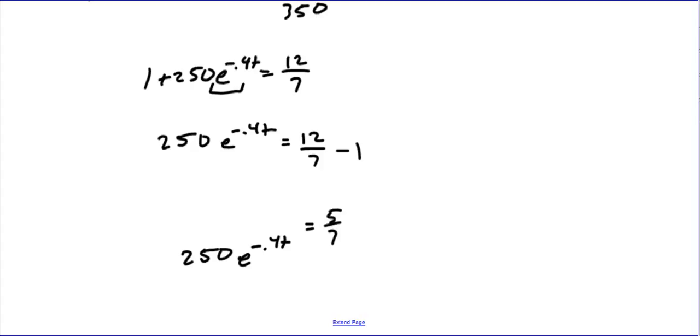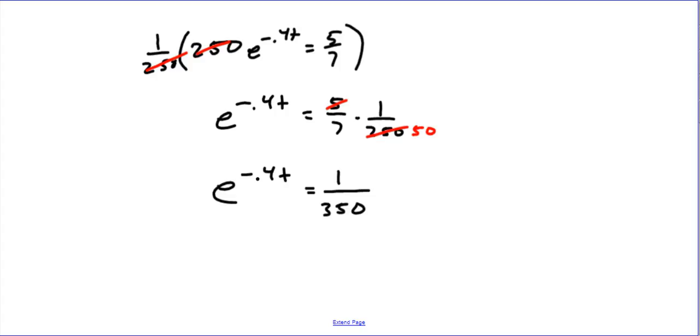So we're simplifying, we've got our answer. Now the last thing, we're getting to the end, but now we want to get t by itself. So we're going to divide by 1 over 250 from both sides. That will cancel out, and we also have to do that over here. So we have e to the negative 0.4t equals 5 sevenths times 1 over 250.